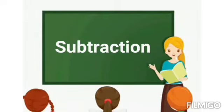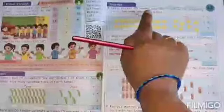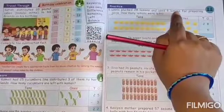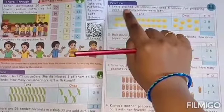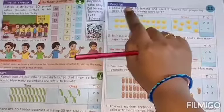Hi cookies! In last class we learned about subtraction. Today we will see a continuation of that. Leela plucked 28 lemons and used 5 lemons for preparing juice. How many lemons were left?